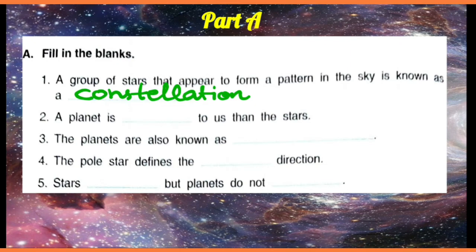Number 2: a planet is dashed to us than stars. So, a planet is nearer to us as compared to the stars.